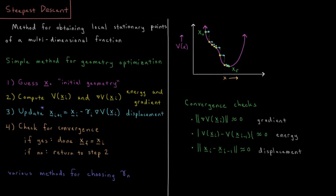This video will discuss the steepest descent algorithm for energy minimization in computational chemistry. As mentioned in the previous video, energy minimization or geometry optimization is a procedure to generate the set of coordinates which has a minimum energy for some molecular system of interest for simulation. Steepest descent is an example of a specific algorithm for geometry optimization — it's a method for obtaining local stationary points of a multi-dimensional function, and it is the simplest method for geometry optimization.